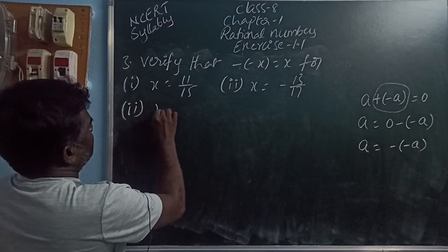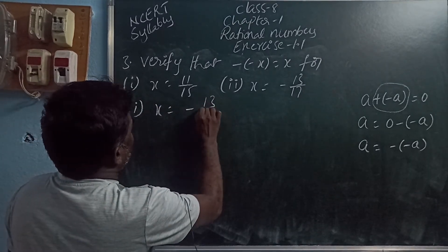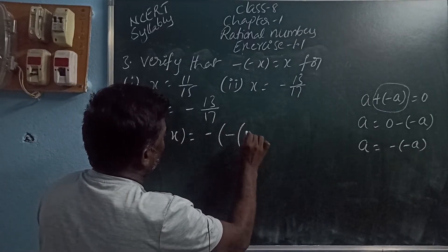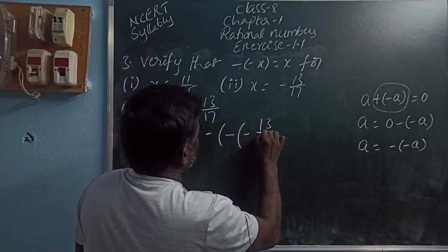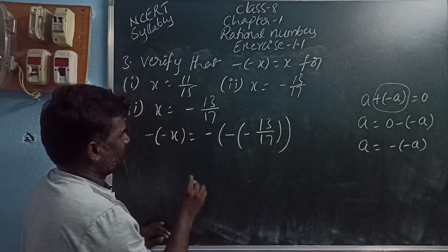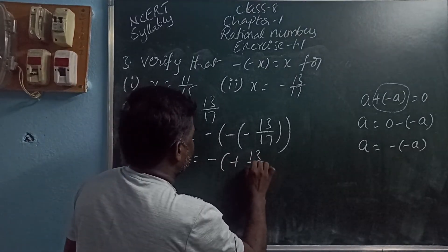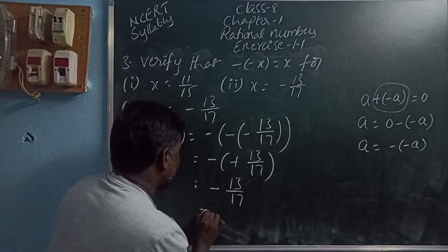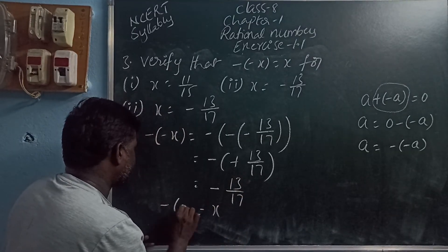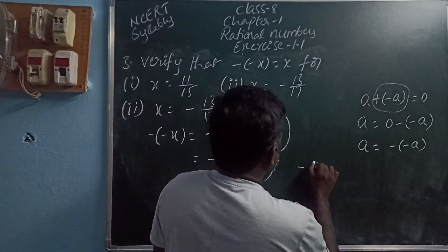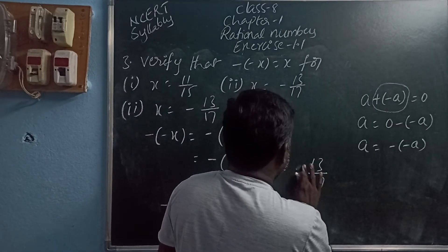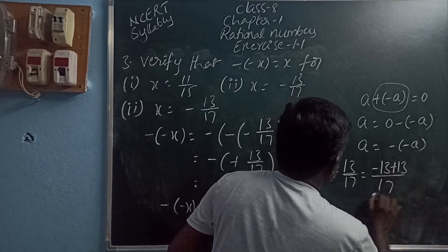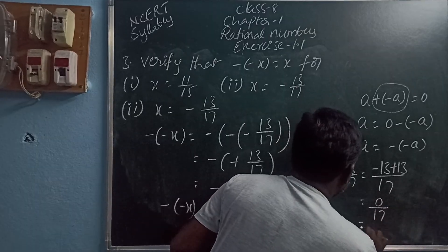Second case: x equals minus 13 by 17. Minus of minus x equals minus of minus of minus 13 by 17. Minus minus gives plus, so minus of plus 13 by 17. Minus into plus gives minus 13 by 17, which is x. So minus of minus x equals x. Minus 13 by 17 is added to plus 13 by 17. Write the common denominator and add the numerators: 0 by 17 is 0. Zero by anything is zero. Thank you.